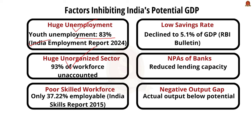Most of the work in the unorganized sector goes unaccounted while calculating GDP. Next is the poor skilled workforce — the unskilled population is a major hurdle to achieving potential GDP. India's Skilled Report of 2025 says only 37.22% of surveyed people were found employable in India. Next is the low rate of saving — India has a very low level of investment, which has slowed down growth of capital stock. According to the RBI Bulletin, India's net household financial saving rate has declined to 5.1% of GDP in 2022-23, the lowest in decades.